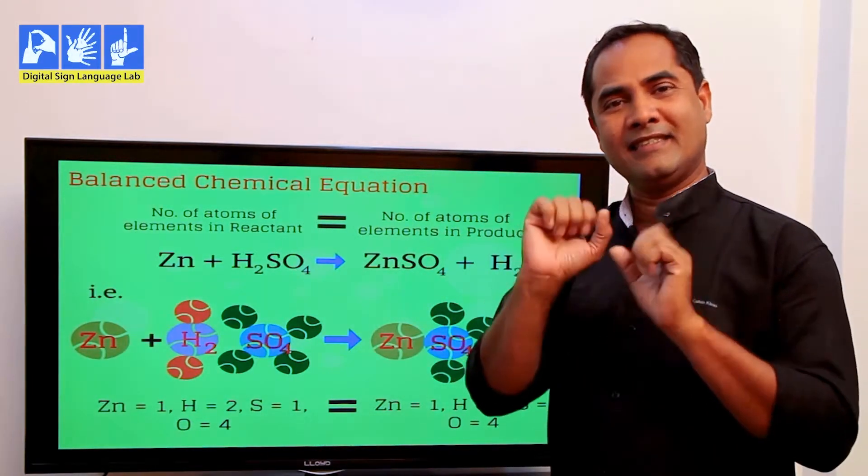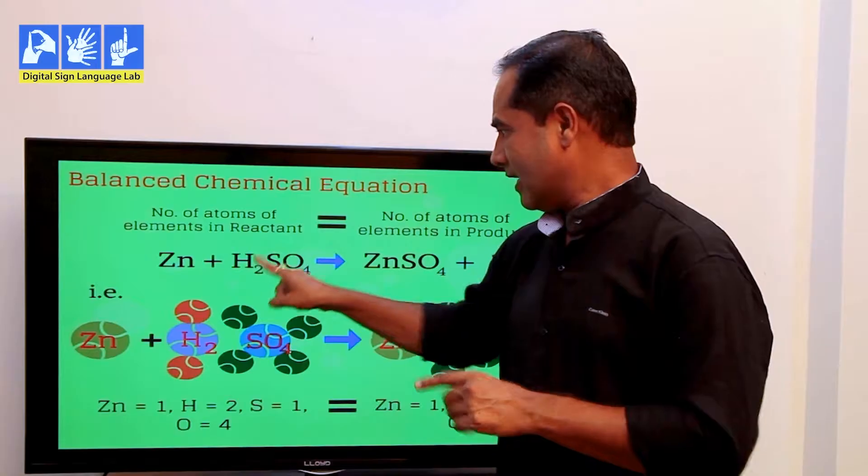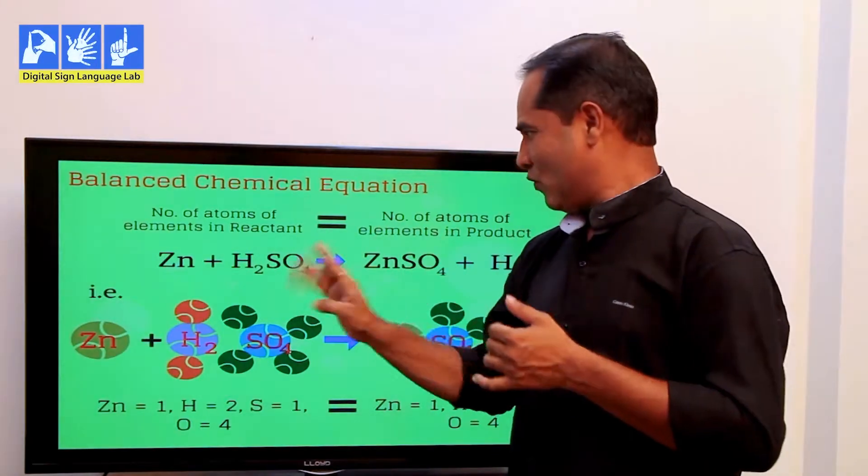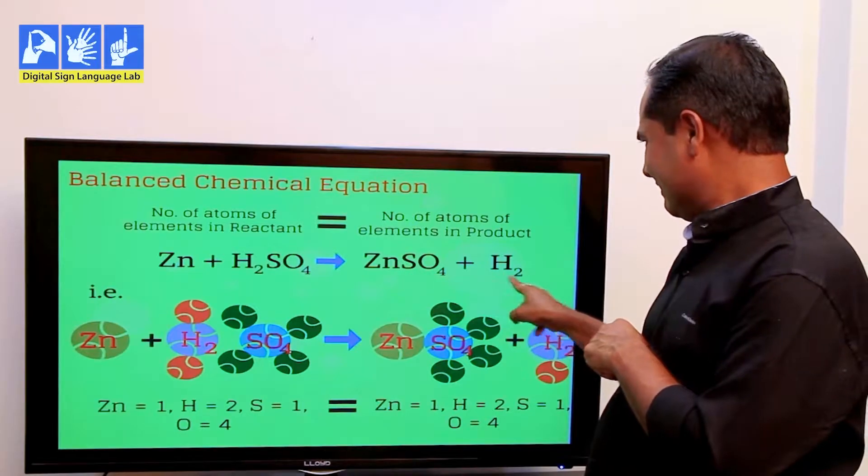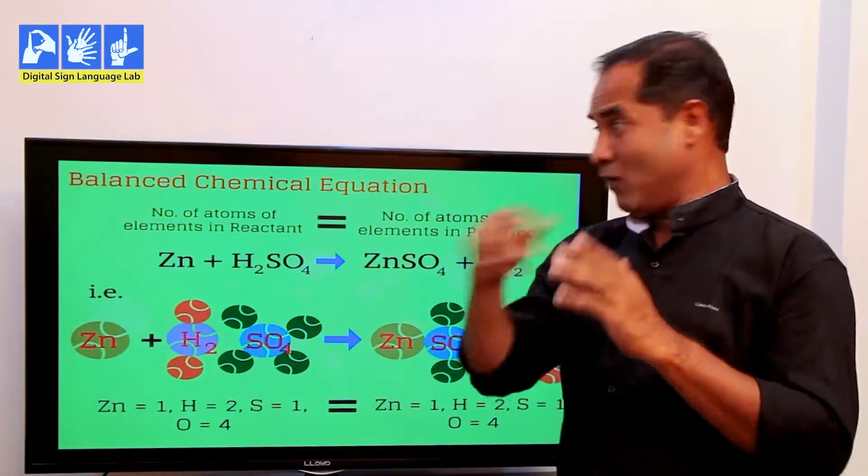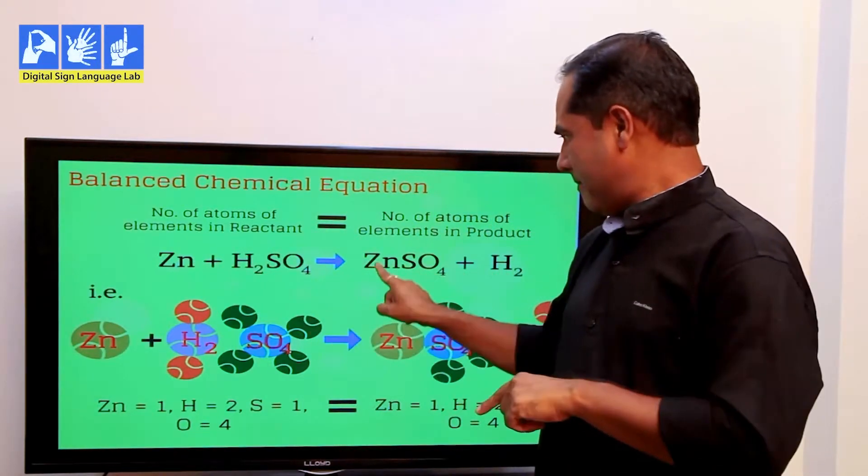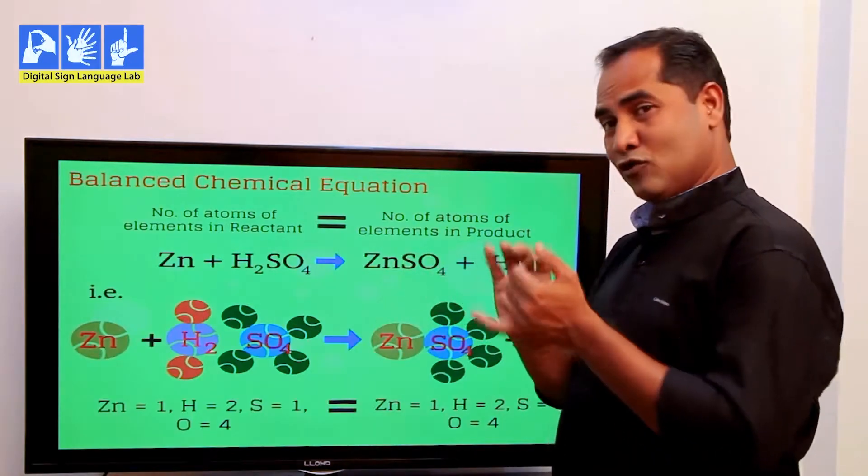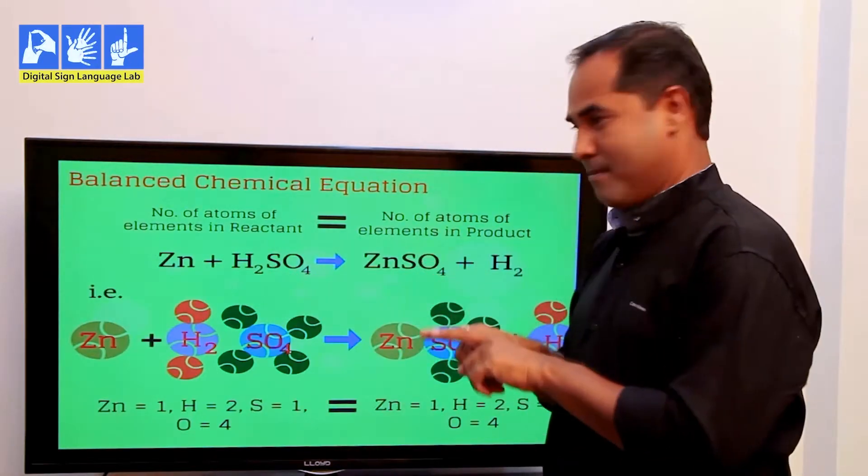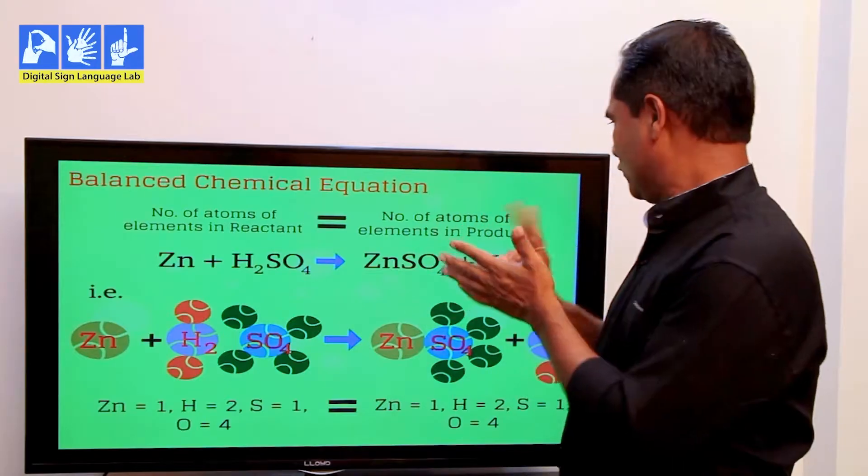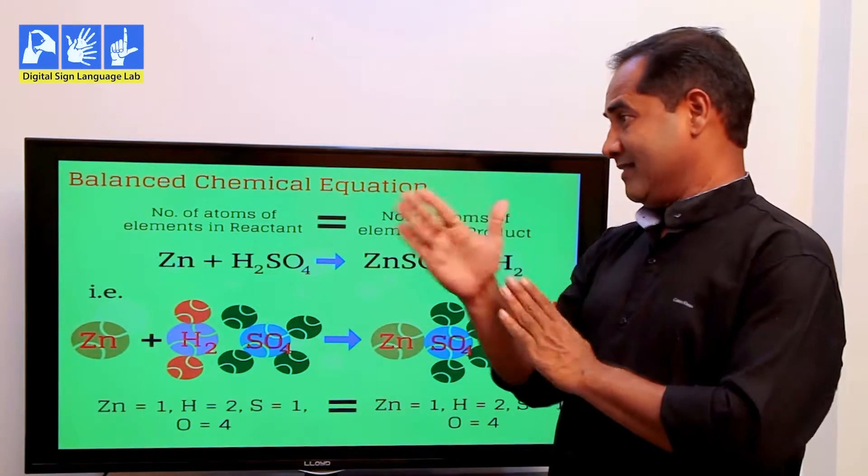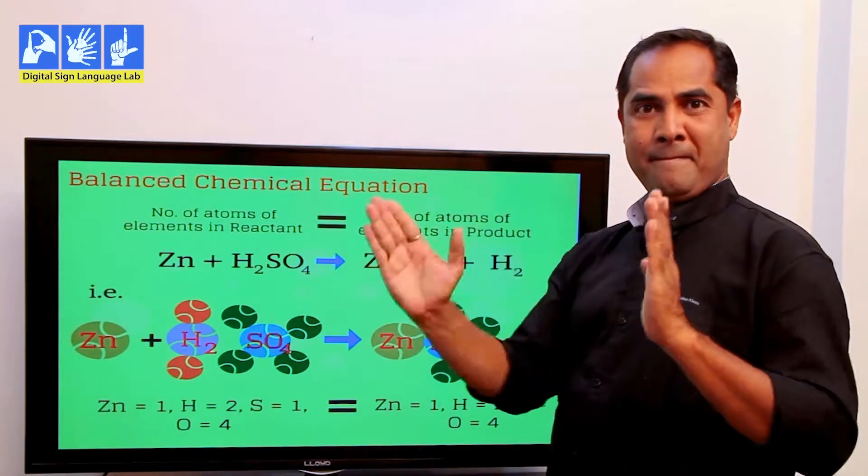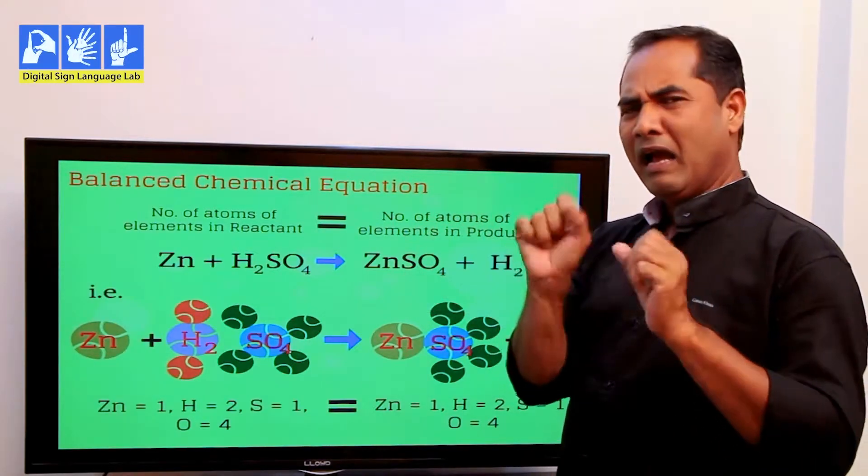I'll give an example. That's zinc, that's H2SO4 or sulfuric acid. On the right-hand side, we have zinc sulfate. So you can see on the left-hand side, there was one atom of zinc and it remains the same. Similarly, hydrogen, we had two on the left-hand side has to be balanced on the right-hand side. So both sides have to be balanced.